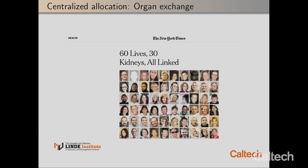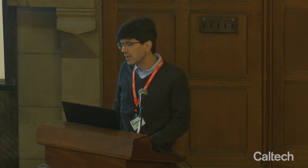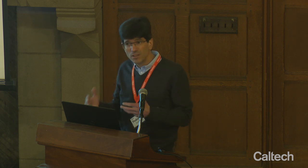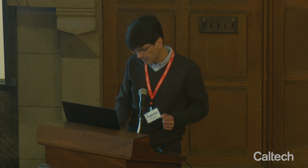Another example, a bit closer to what we do at Caltech, is organ allocation. You have organs available either through deceased donors or through living donors, and patients who need a transplant of a kidney, a lung, or a heart. This is a situation where in principle ideas from markets could improve on the allocation, but where there's a very strong ethical reaction against using money and markets. So you can do it in a centralized way that doesn't use decentralized markets, but where some of the ideas for why markets work well can be used to design the centralized mechanism.